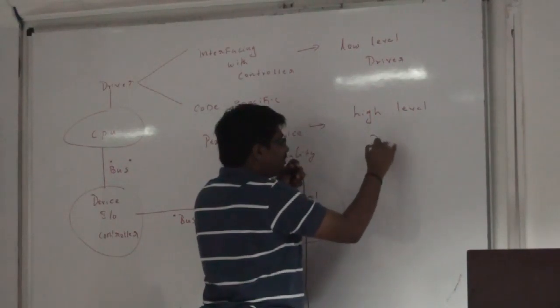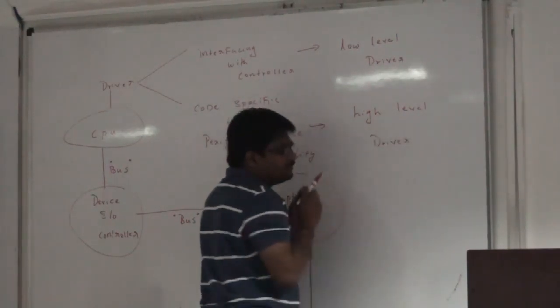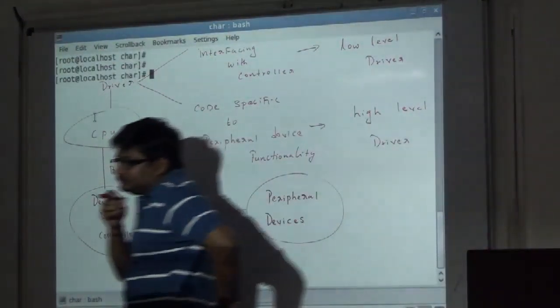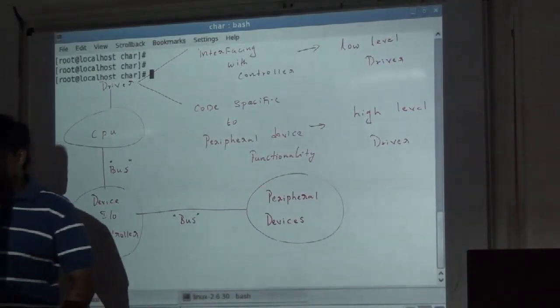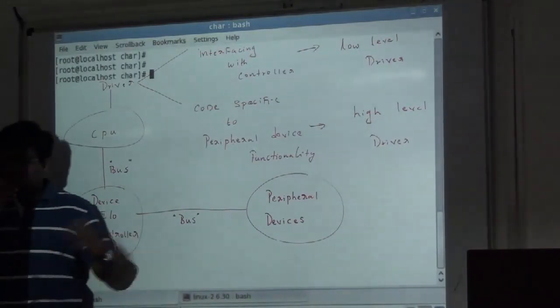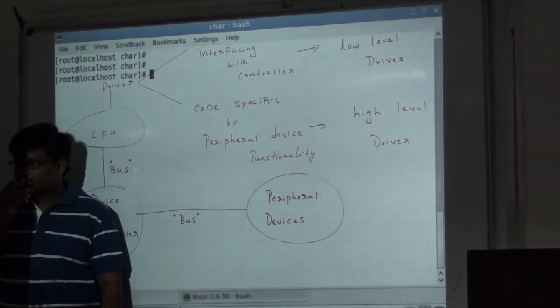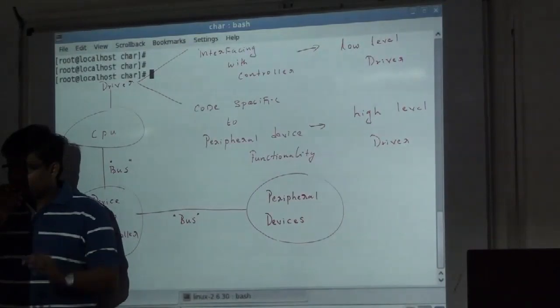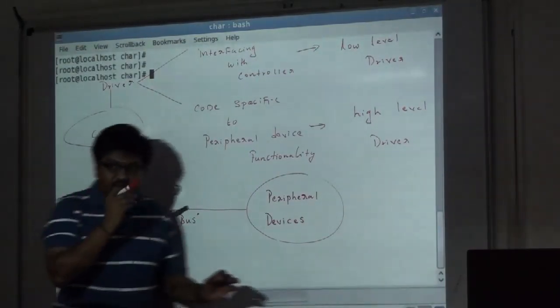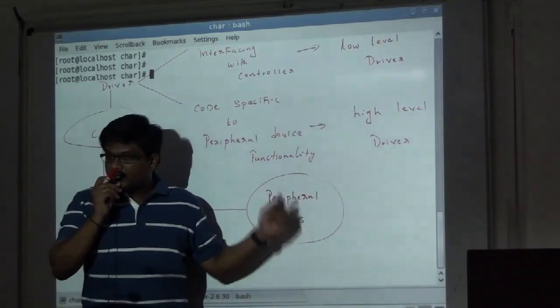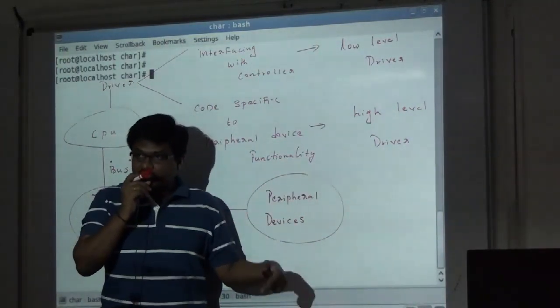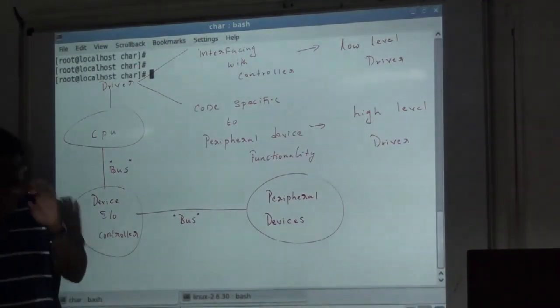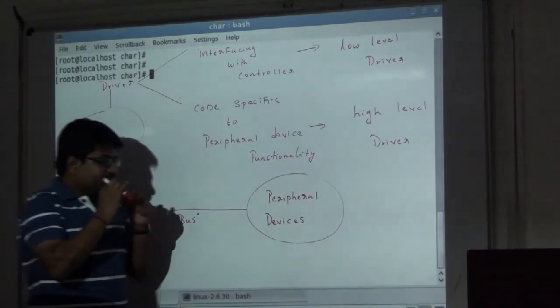So two types of drivers now exist, or two different modules a driver is broken after in noise environments. Low-level and high-level. High-level responsible to communicate or responsible to provide the code to interact with the end device. Low-level responsible to carry out the operations of the high-level by interacting with the end device. Now these two drivers reside like this.